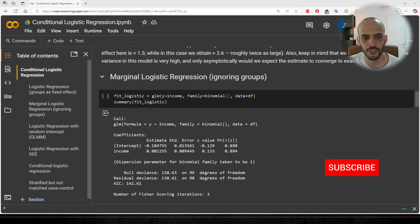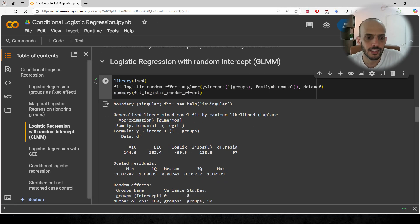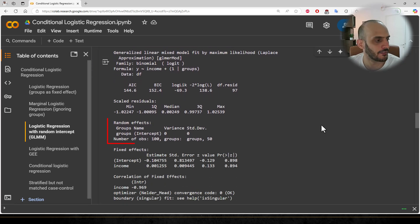Next, we fit the marginal logistic regression, meaning we ignore the groups. As we can see, this model completely fails to detect any effect of income on election outcomes. Next, we fit the GLMM model with a random intercept. Here, we get a warning about a singular fit, and we can see that the model failed to detect any random intercept, effectively giving us the same output as the marginal model.